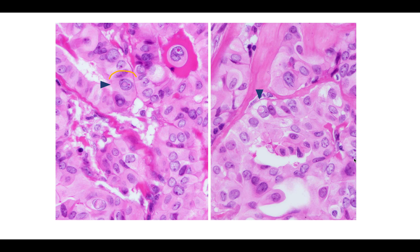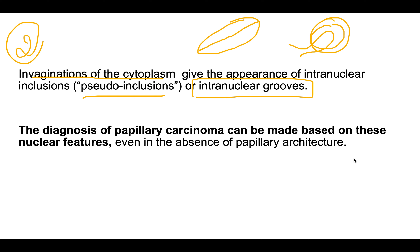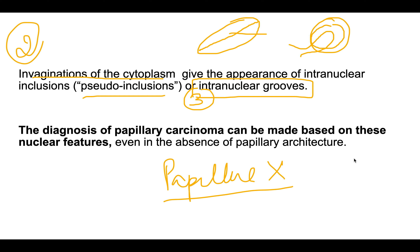The second nuclear feature is nuclear inclusions — pseudo-inclusions where cytoplasm invaginates inside the nucleus, giving the appearance of an inclusion. The third nuclear feature is nuclear grooves: a longitudinal line running through the nucleus. Even if no papillae are seen, the presence of nuclear features alone allows a diagnosis of papillary carcinoma.